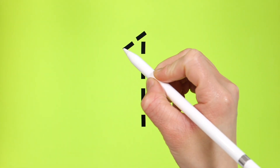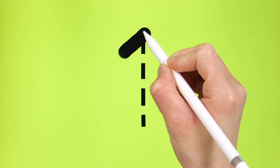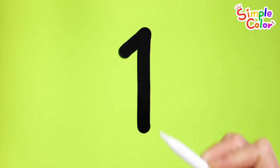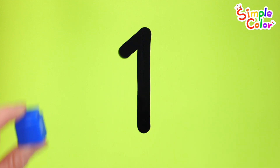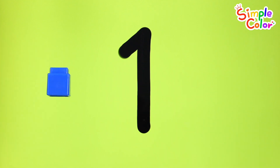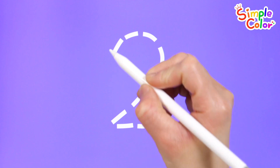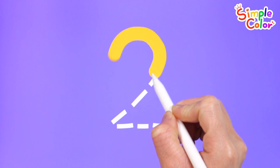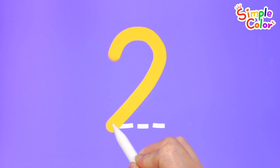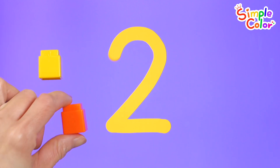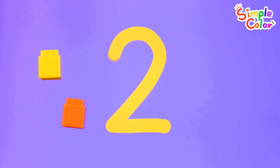Let's write down the numbers and count them with blocks. I'll write the number 1. Now I'll write the number 2 on the purple board. 1, 2.